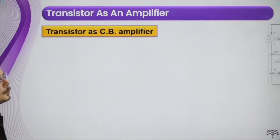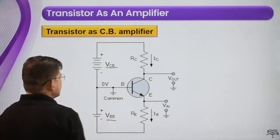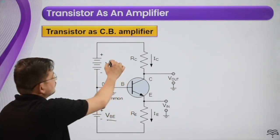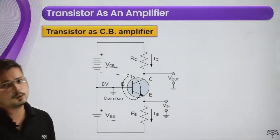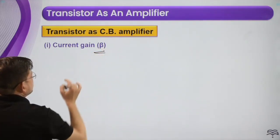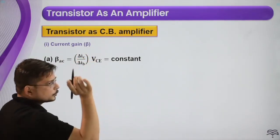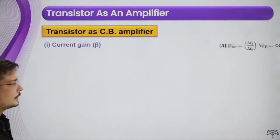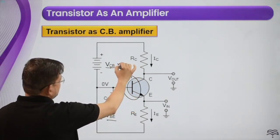Now we talk about the transistor as a common base amplifier. In the common base configuration, the base is common. The base potential is kept constant. The collector-base and emitter-base potentials — which we have seen above — will be taken as constant.